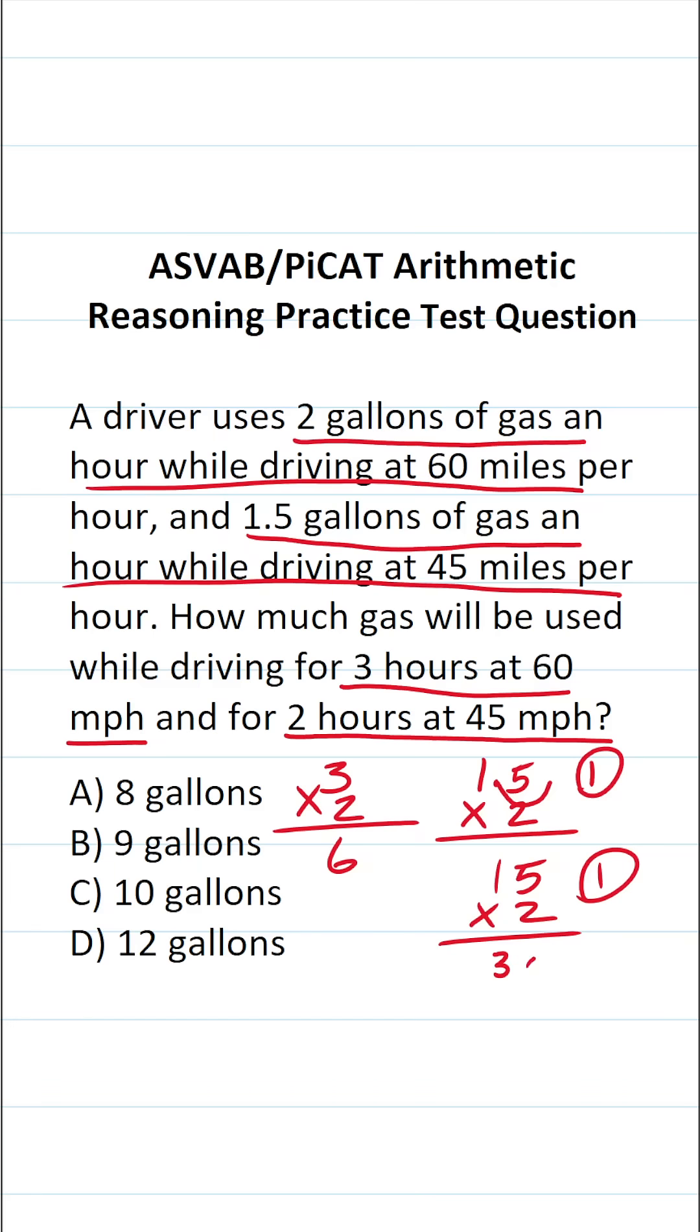15 times two is 30. Bring in our one decimal. So while driving at 60 miles per hour, they use six gallons of gas and while driving at 45 miles per hour, they use three gallons of gas. Six plus three is nine. So in total, they use nine gallons of gas.